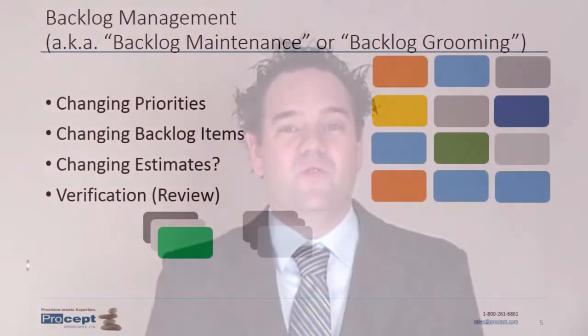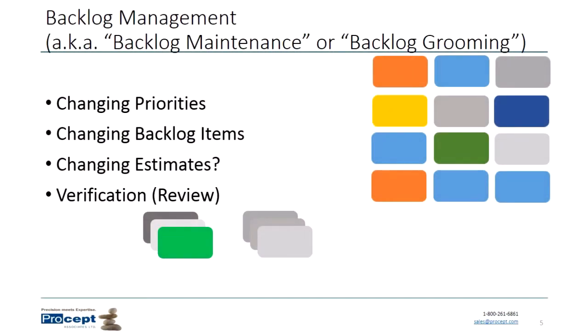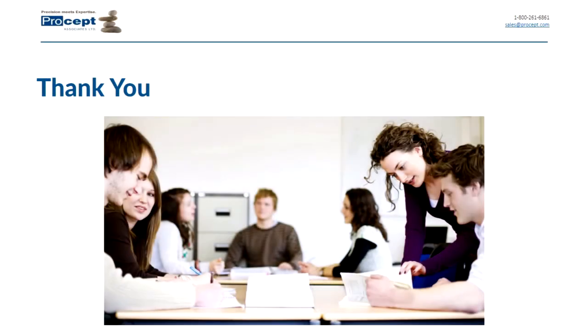The final step of maintaining our backlog is what we call backlog review or story review — in BABOK terms, that's verification. This means ensuring the quality of those backlog items: that they're consistent, complete, verifiable, testable, and so on. That can cause us to make some changes to items in our backlog. Thanks very much. This has been Jonathan Nittuck with ProStep Associates. If you have any questions about backlog items or any other content from our training courses, you can visit our website. Thank you.